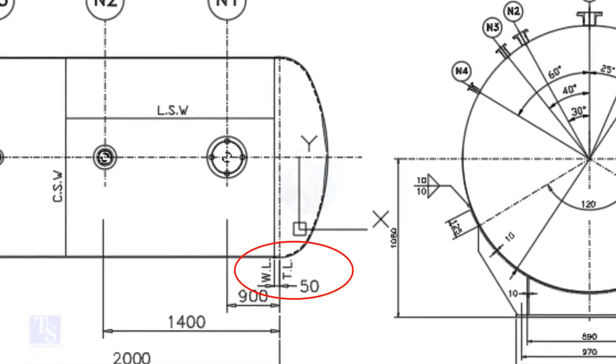What is TL and WL? TL stands for Tan Line and WL stands for Weld Line. The surface between the TL and the WL is called SF or Straight Face. Here, the straight face is 50mm.